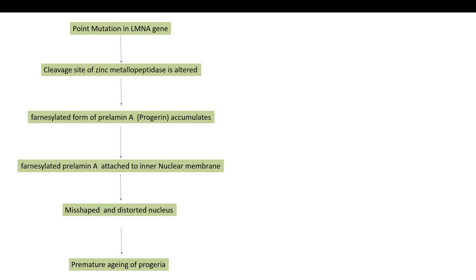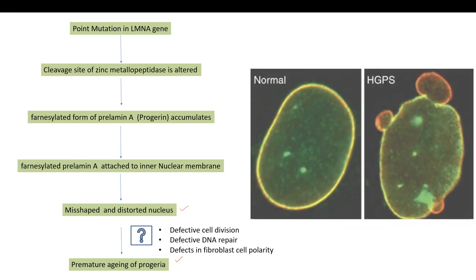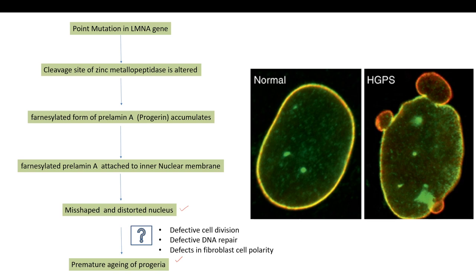The mechanisms by which these two events are connected are not known yet and the mechanisms are only speculative, but we know few things about the mechanisms. It may involve some form of defective cell division. It may affect the DNA repair mechanism, as well as a mechanism involving defect in fibroblast cell polarity has also been postulated. This is a picture showing the nucleus of HGPS where there is a surface blebbing of nuclear membrane and this is the normal nucleus.